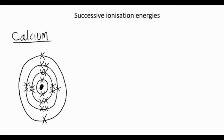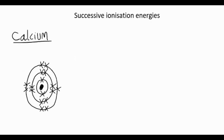Here's a calcium atom. The crosses represent electrons. If we remove an electron, it's called ionization, and we form a calcium plus ion because electrons are negatively charged. If we remove a second electron, we get a calcium 2 plus ion, and that outer shell disappears, and we form a calcium 2 plus ion.